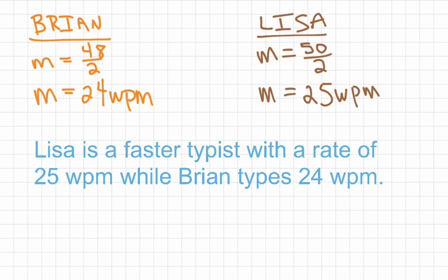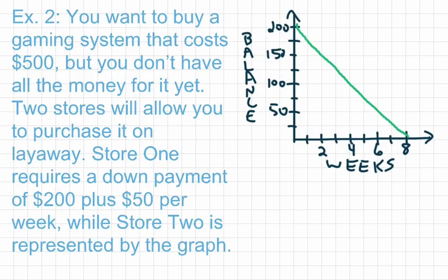Let's look at one more example — this one compares a graph and a verbal description. You want to buy a gaming system that costs $500 but don't have all the money yet. Two stores will allow you to purchase it on layaway. Store 1 requires a down payment of $200 plus $50 per week, while Store 2 is represented by the graph.